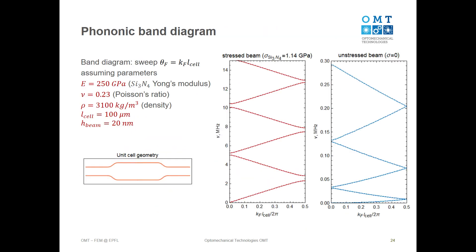Regarding the band diagram: at each point, k times L_cell is a parameter you sweep. You assume this parameter equal to some constant, solve for the eigenmodes of your problem, and get, say, six solutions. Then you go to another parameter value, solve it again, and all solutions change. These are just sets of six points versus each value of the Floquet phase parameter, not joined by a line.